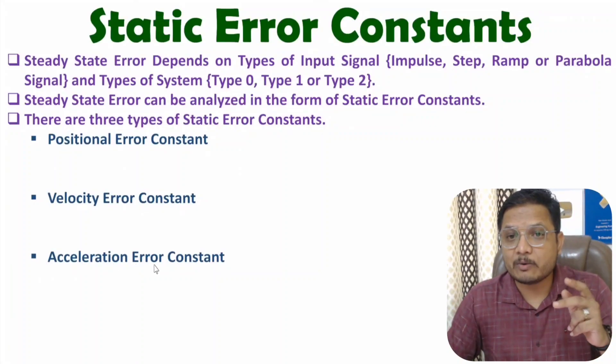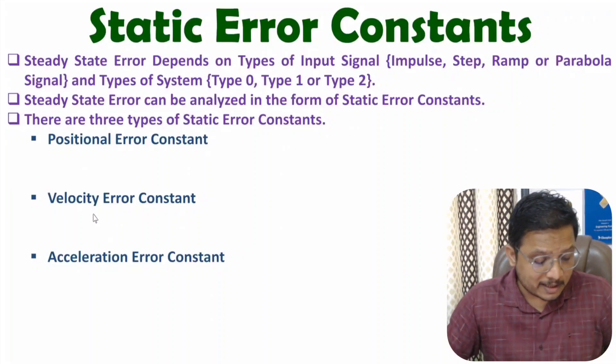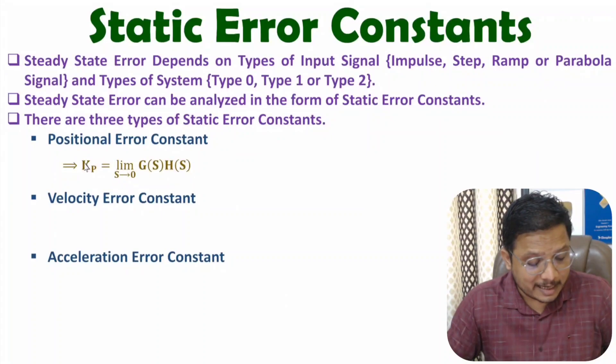First, I will discuss equations of these three constants. Positional error constant is denoted by Kp and can be calculated by limit s tends to 0, G(s)H(s).